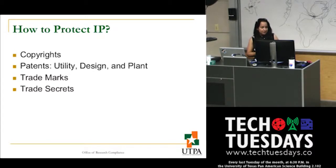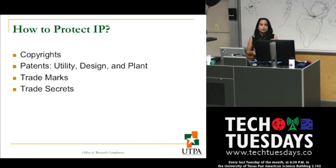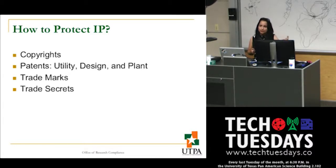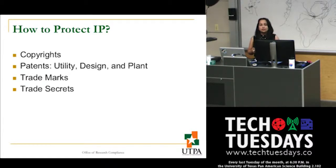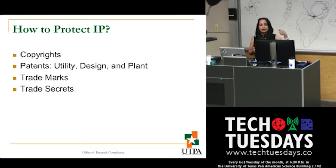Copyrights are enforceable the moment they are put in a tangible form. If it's a poem, the minute you write it on paper, that's a tangible form. If it's a picture, the moment you take it, you have the copyright. If it's a film, the minute you're making it, you have copyrights to that film. You cannot copyright ideas — it has to be in a tangible form. You don't have to register with the Library of Congress, but if you want to protect your copyrights against someone else, it is highly advisable to register them there.